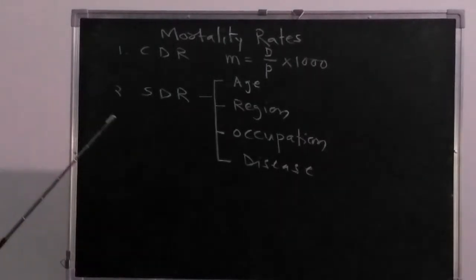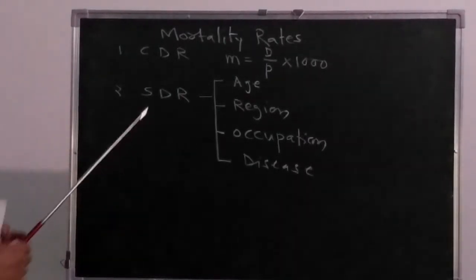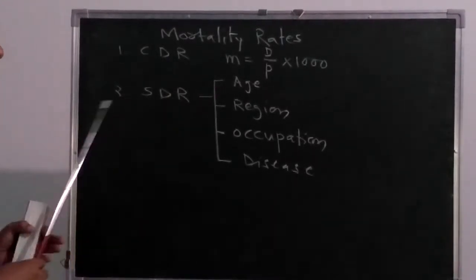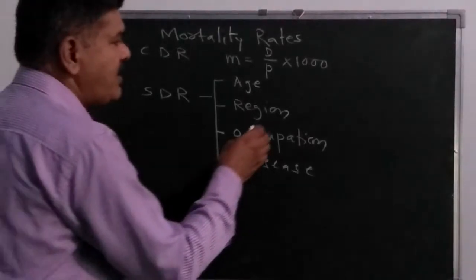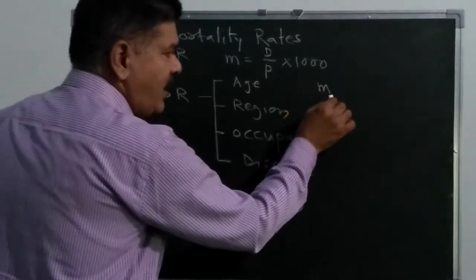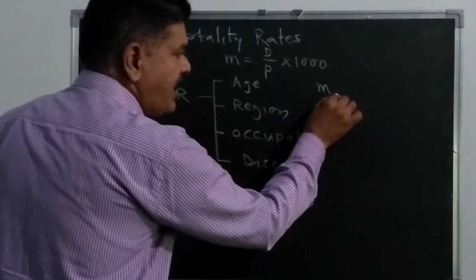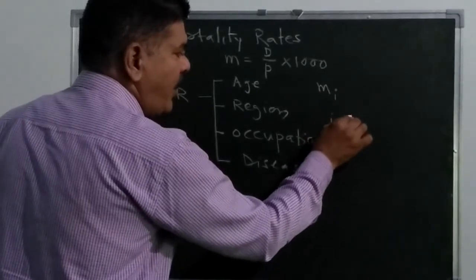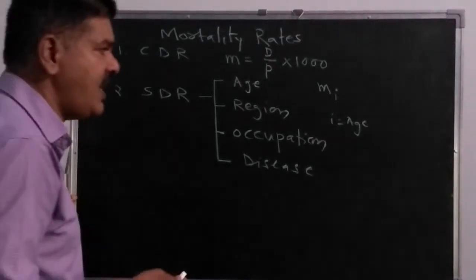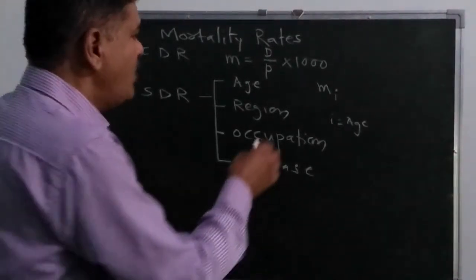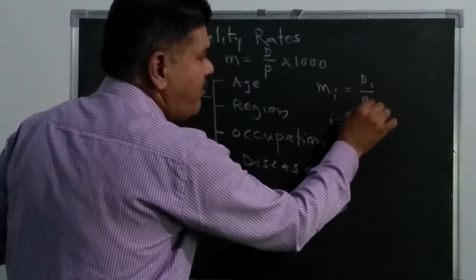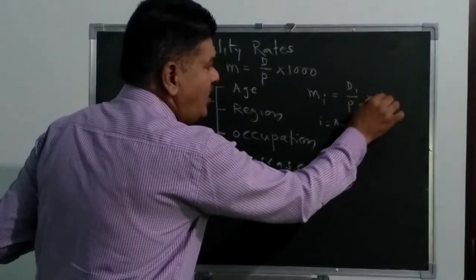To calculate specific death rate, the same formula used in CDR applies with some correction. M with suffix i denotes the specific death rate, where i stands for age, region, or any specific section of the population. Mi = Di divided by Pi multiplied by 1000.